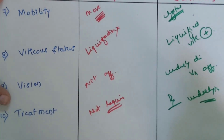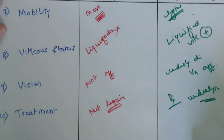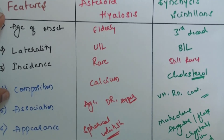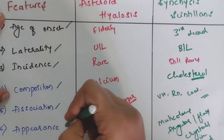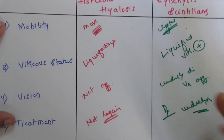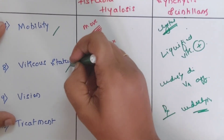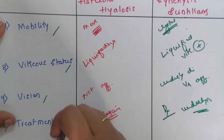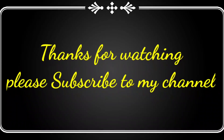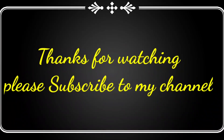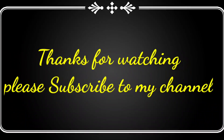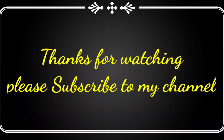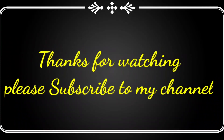These are the ten differences between Asteroid Hyalosis and Synchisis Scintillans. Remember the headings: age of onset, laterality, incidence, composition, association, appearance, mobility, vitreous status, vision, and treatment. I hope this short video is useful to all of you. If you like my videos, please subscribe to my channel, press the bell icon for notifications, and do leave your valuable comments. Thank you so much.